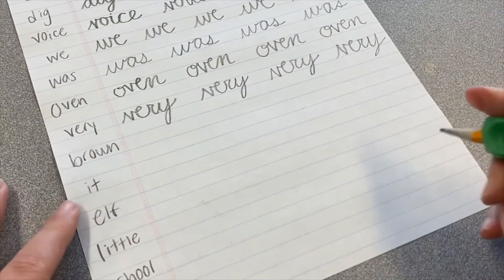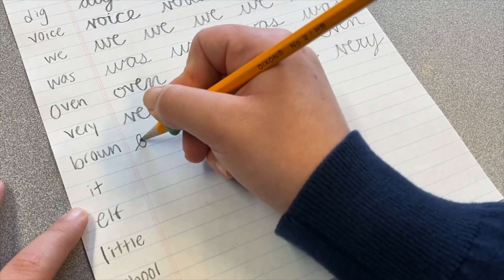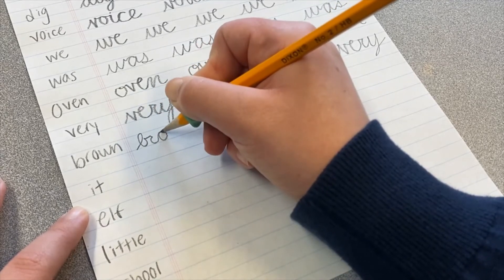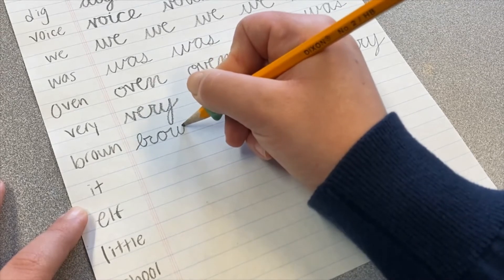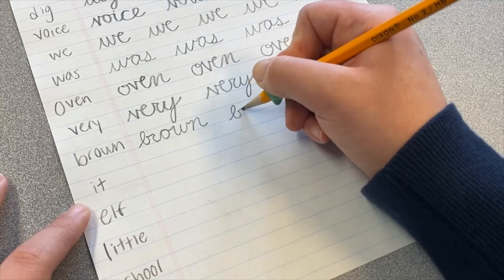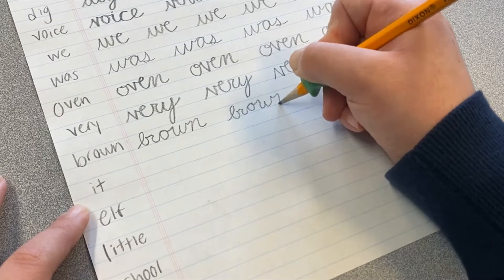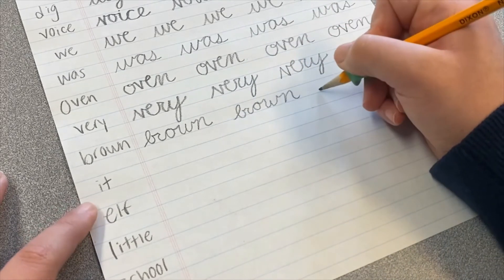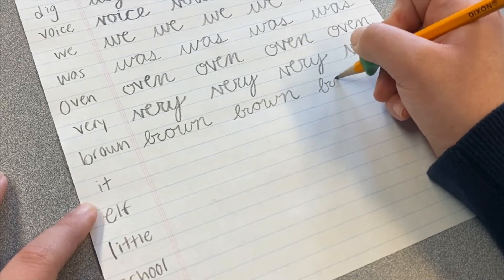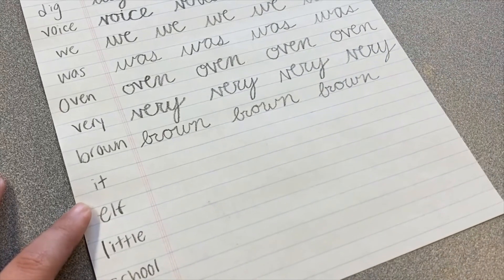And the next word is the word brown. So we'll make our B goes in, out, right into the R, and then the O, into the W, into the N, brown. B, a little small line for the R, into the O, into the W, into the N, brown.